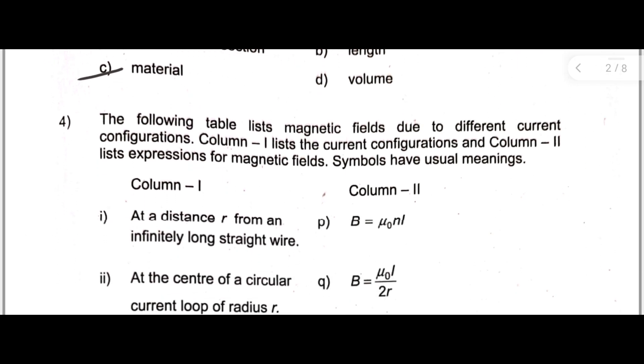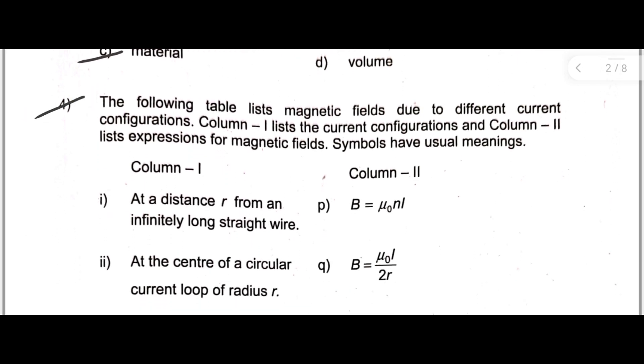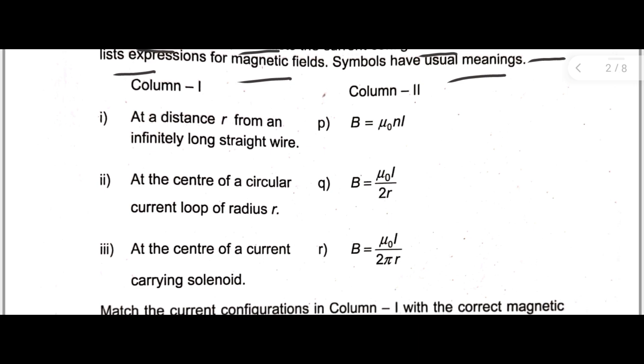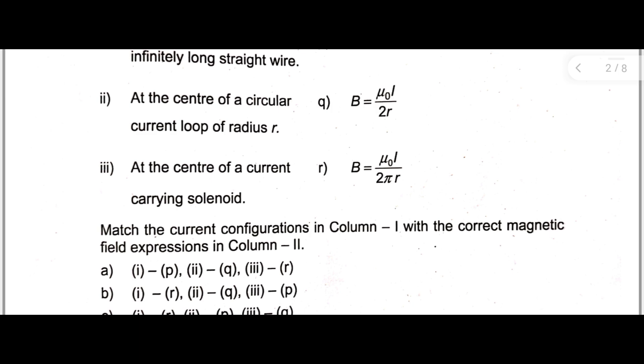Next, fourth question. The following table lists magnetic fields due to different current configurations. Column one lists the current configurations and column two lists the expressions for magnetic fields. Symbols have usual meanings. Here two columns are there, column one and column two. You have to match the correct ones. The current configurations in column one with the correct magnetic field expressions in column two.